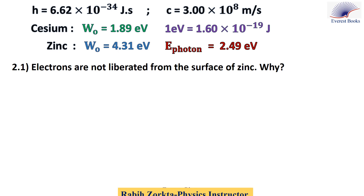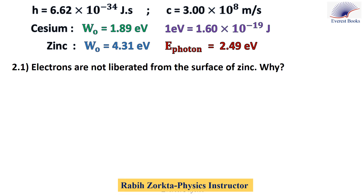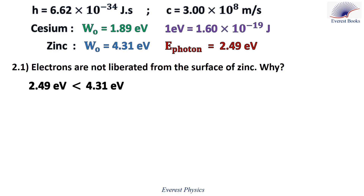Part 2.1: electrons are not liberated from the surface of zinc. Why? Since 2.49 electron volts, which is the energy of an incident photon, is less than 4.31 electron volts, which is the work function of zinc. Therefore, no electrons are liberated from the surface of zinc.